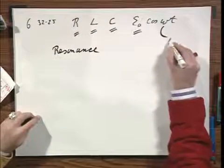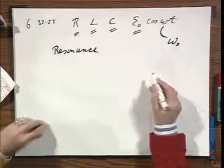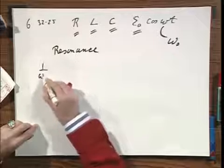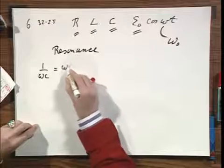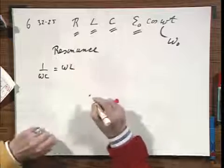That means I know immediately that omega equals omega zero. At resonance, one over omega C equals omega L. That's when the current reaches a maximum.